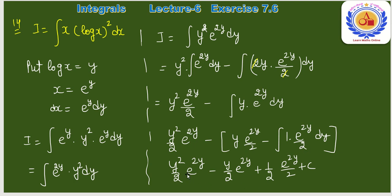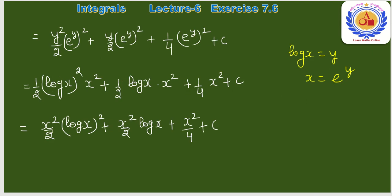Simplify: y²/2·e²ʸ − y/2·e²ʸ + 1/4·e²ʸ + C। x में replace: eʸ = x, y = log x। Final answer: x²/2·(log x)² − x²/2·log x + x²/4 + C।